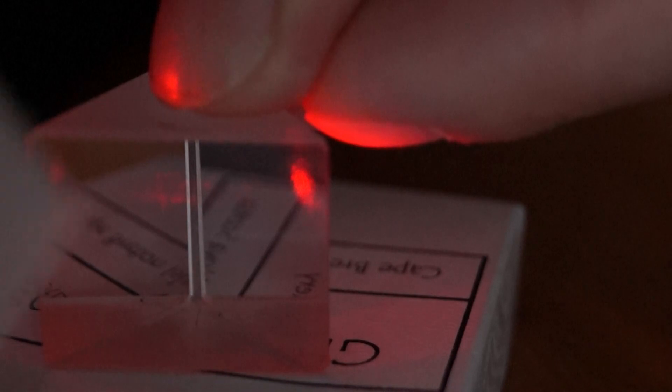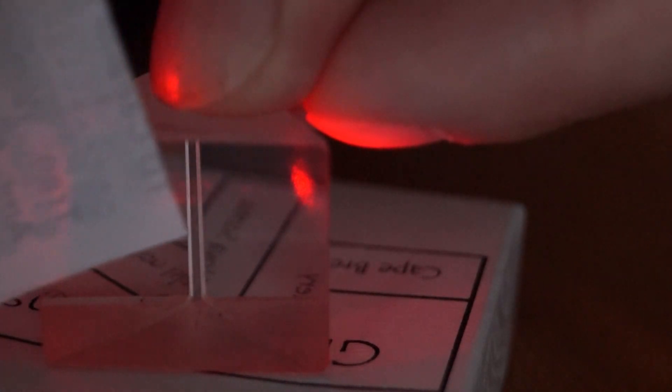To prove that no normal light is coming out of the prism face, a thin piece of paper is brought to the surface. No light can be seen.